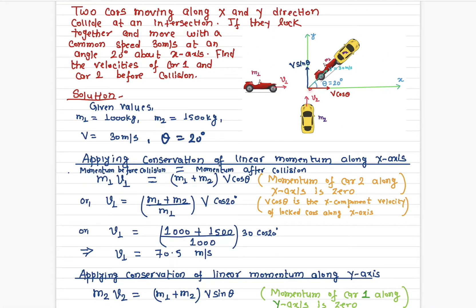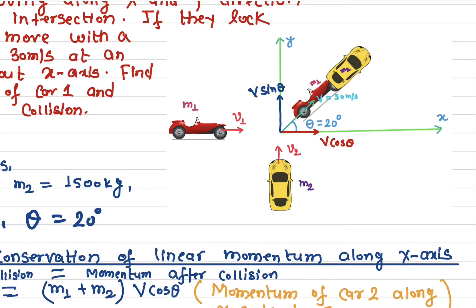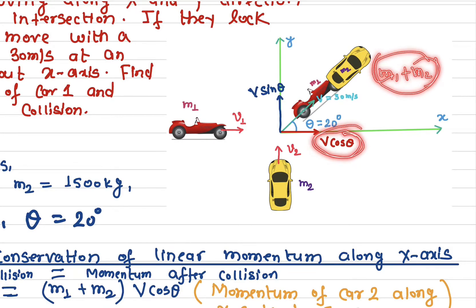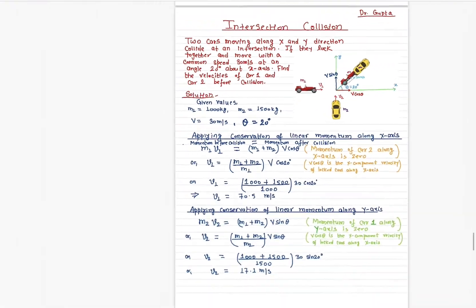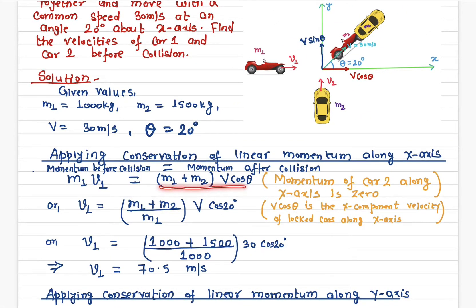The total momentum after collision along the x-axis is the combined mass (m1 + m2) times v·cosθ. Setting before equal to after: m1·v1 = (m1 + m2)·v·cosθ. We can solve for v1 — θ is known as 20 degrees and both masses are known.